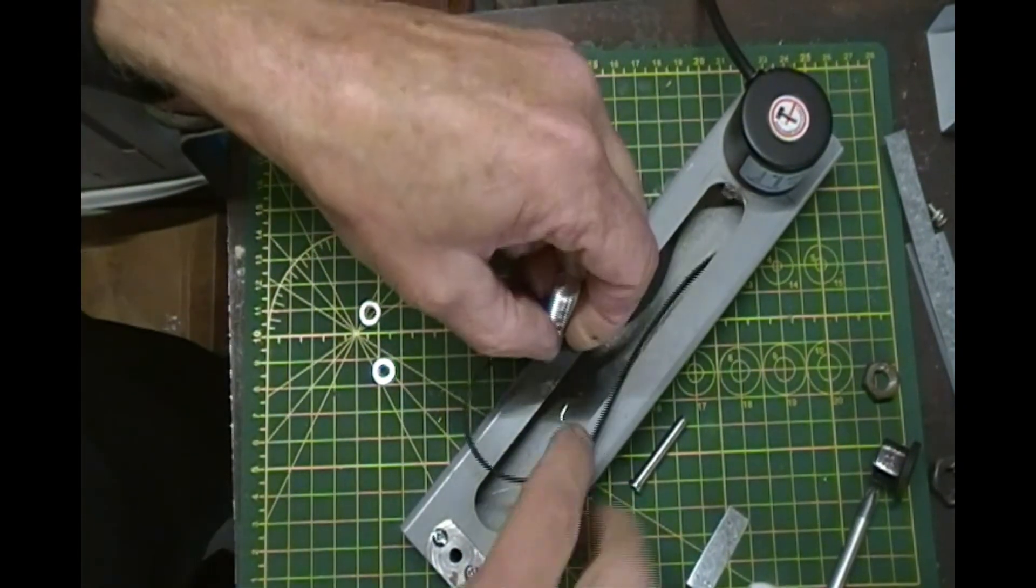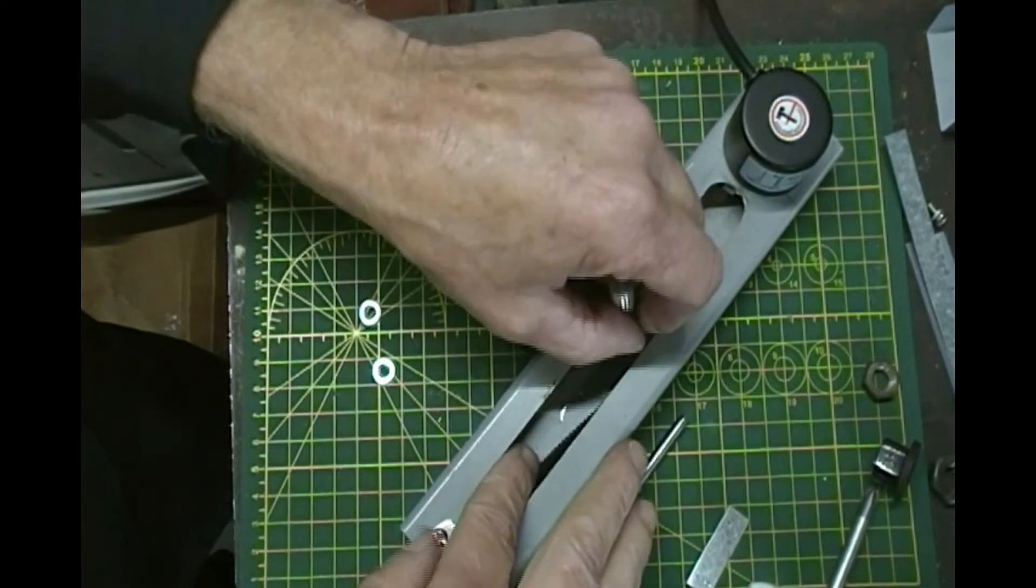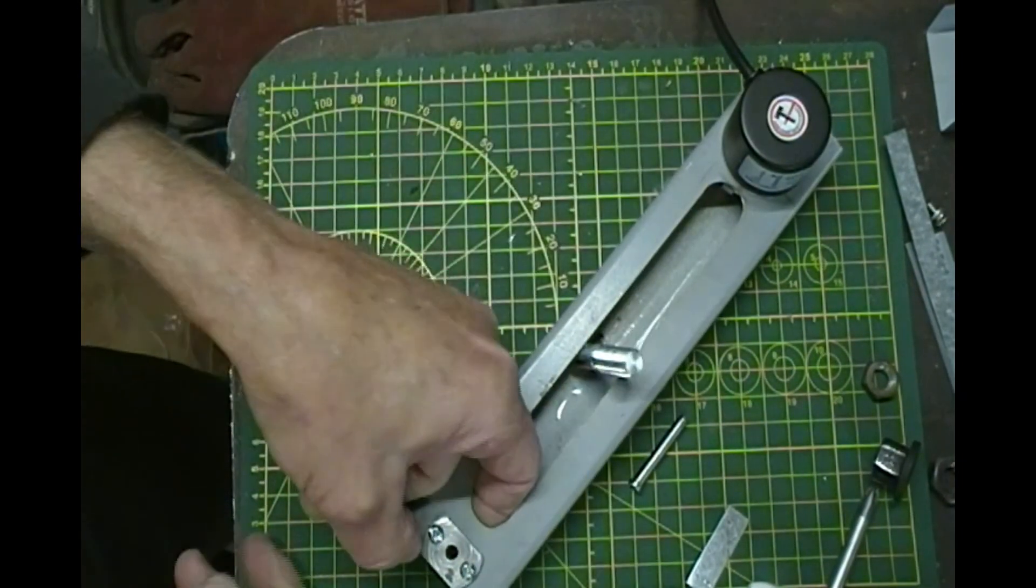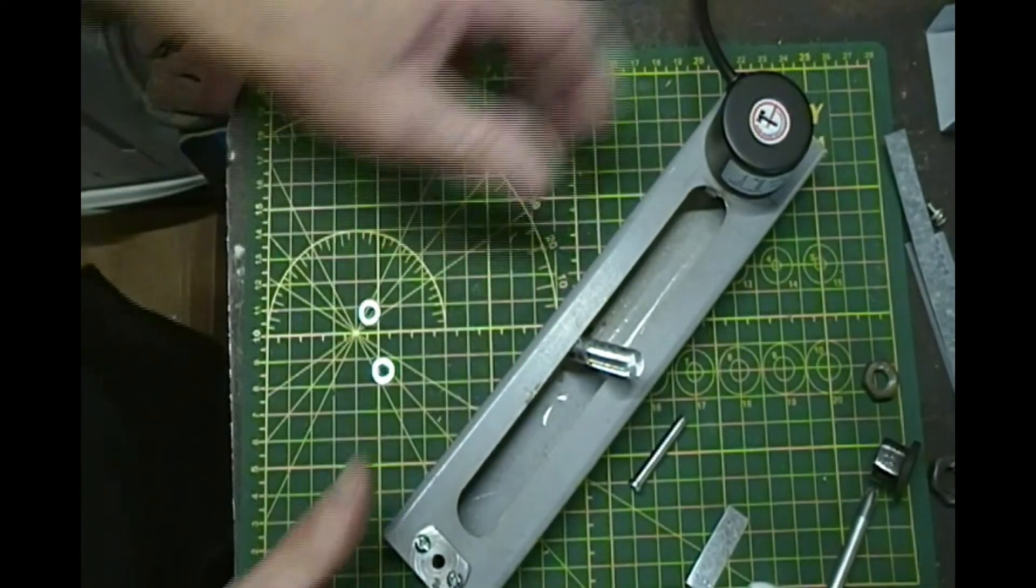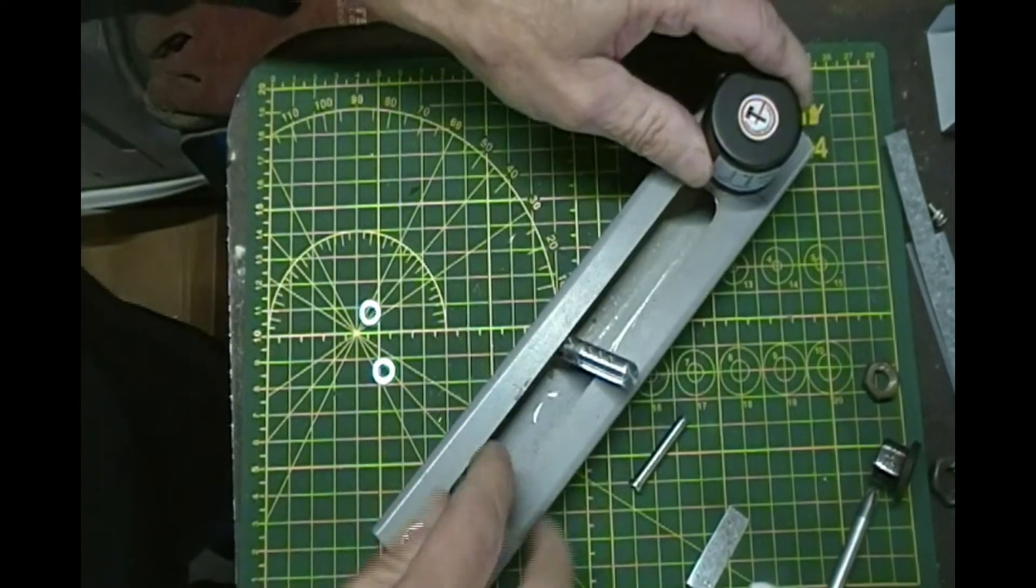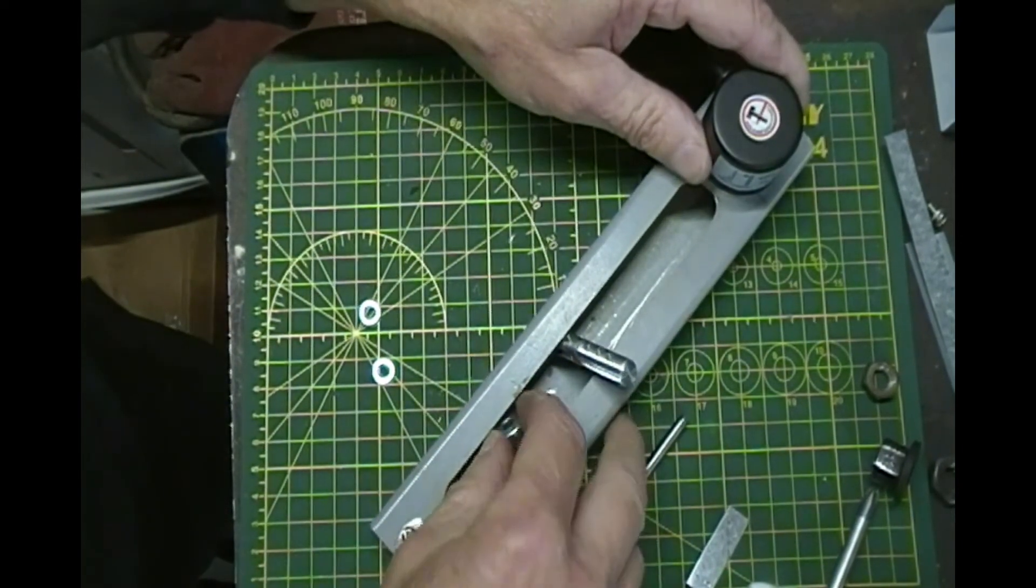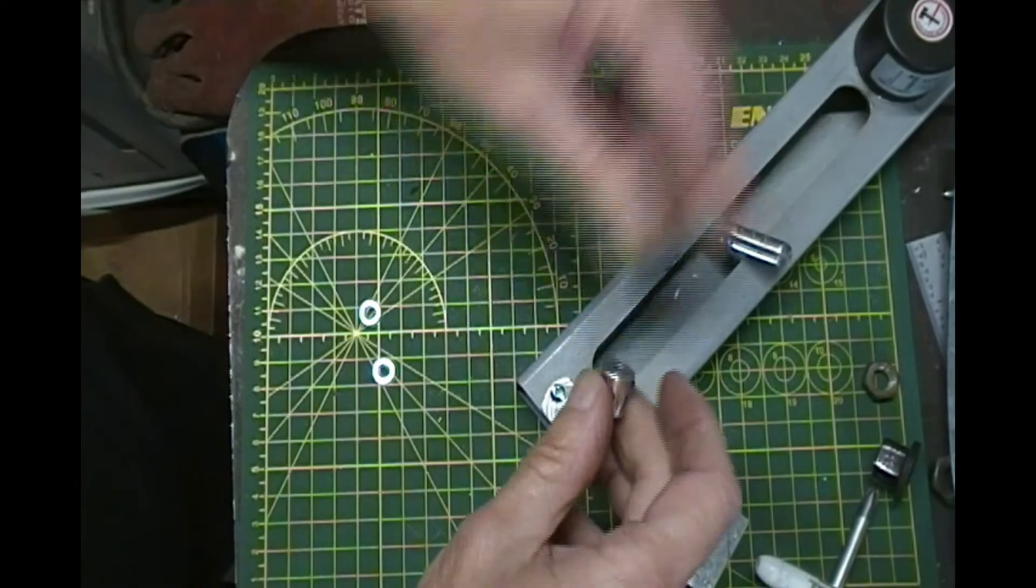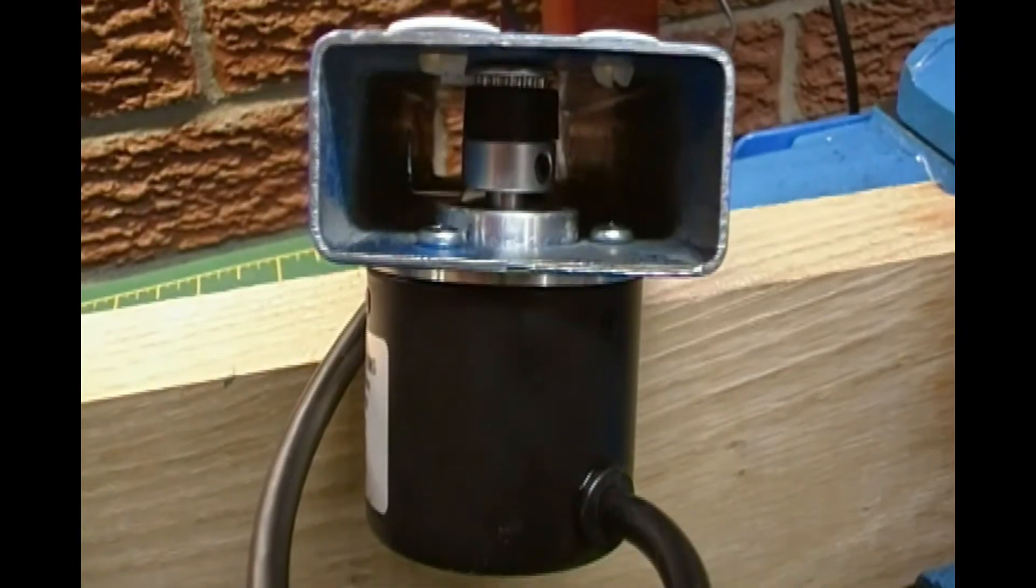I slipped the belt over the idler pulley and put the idler pulley back in its original position then reinserted the 5 millimeter shaft. I did not have to adjust the tension on the belt. The belt fit perfectly snug but not too tight.